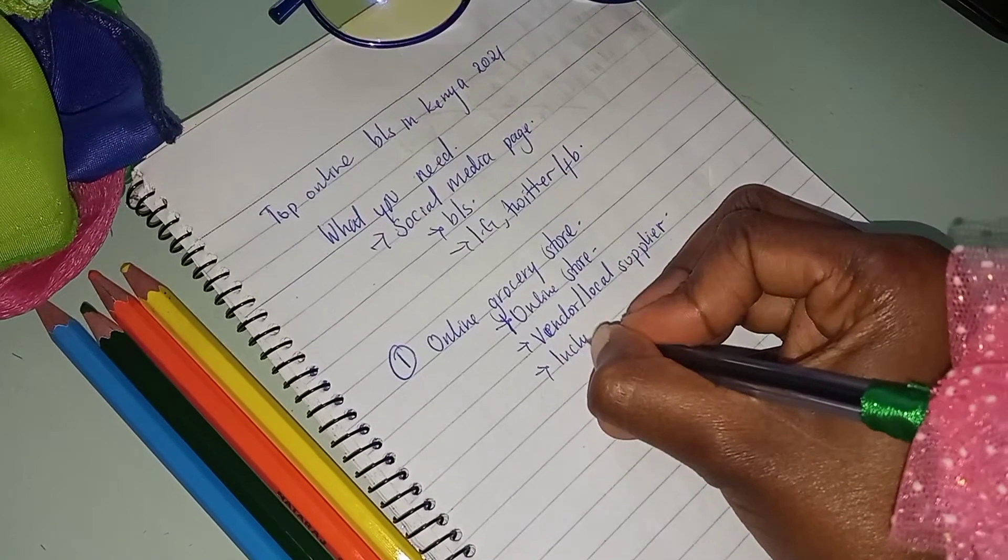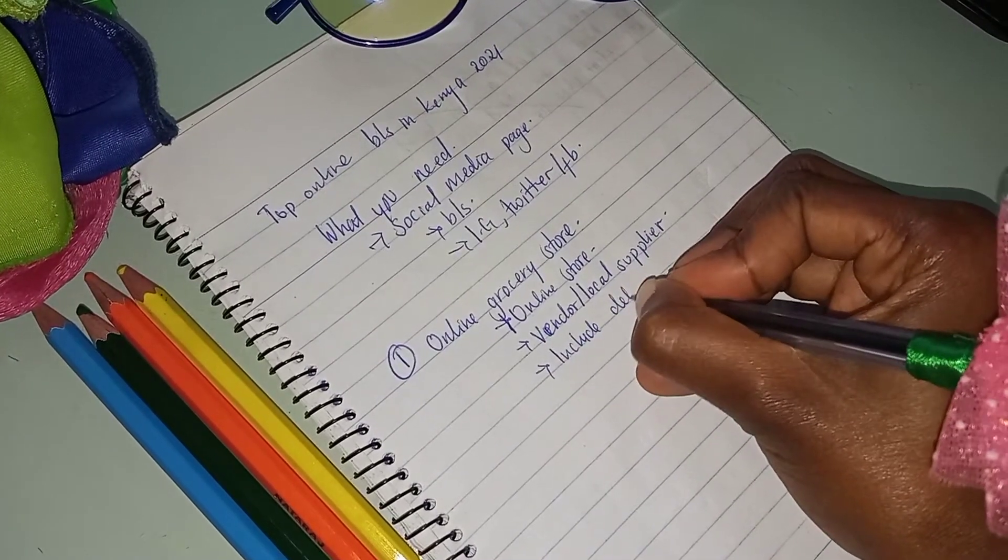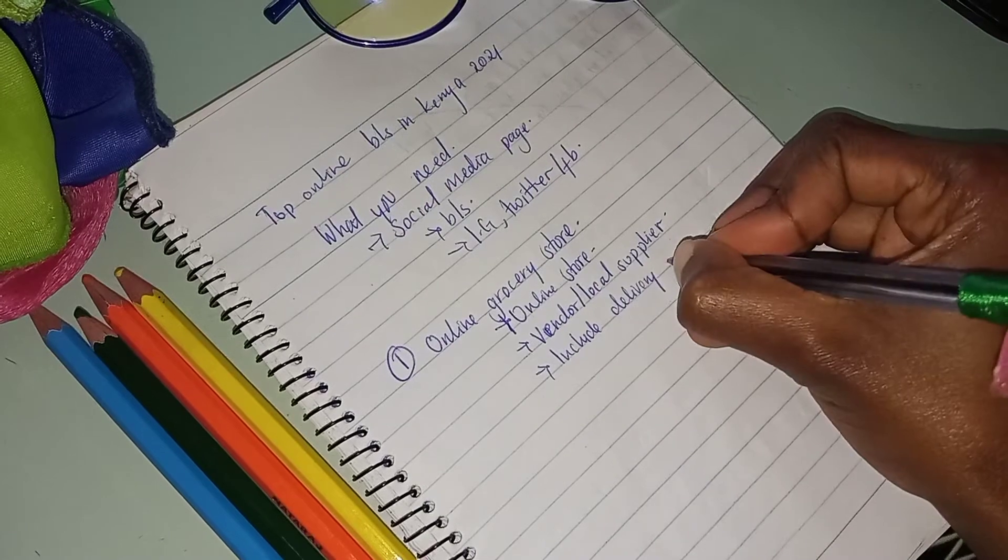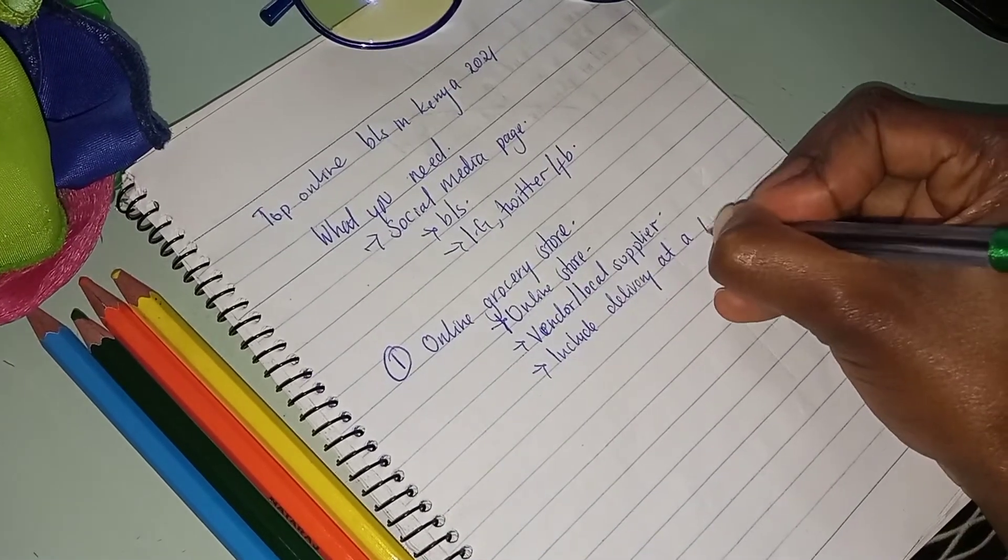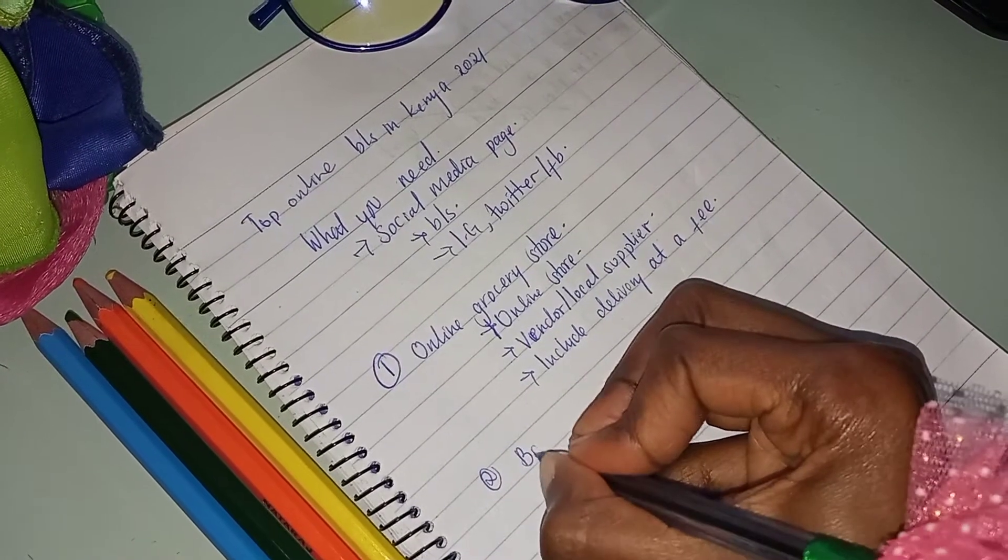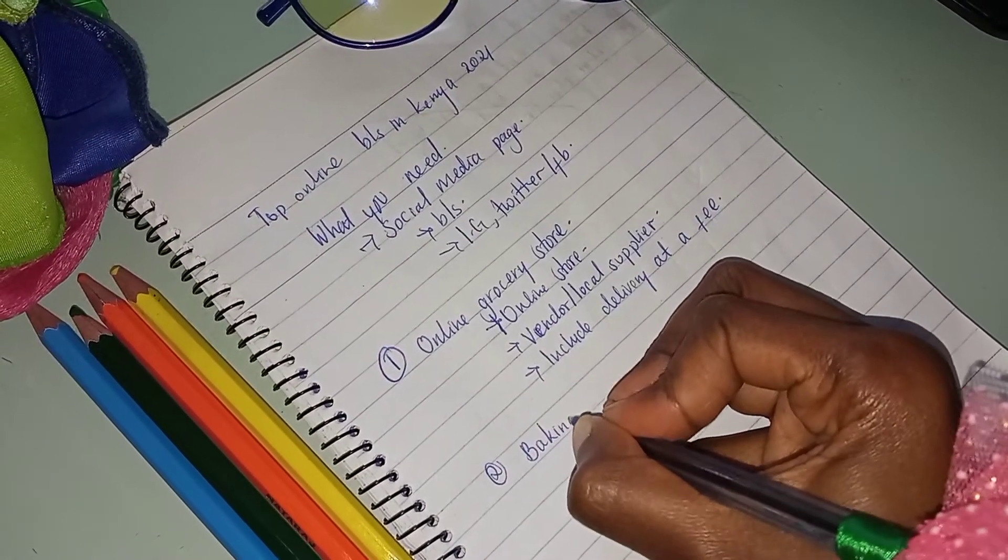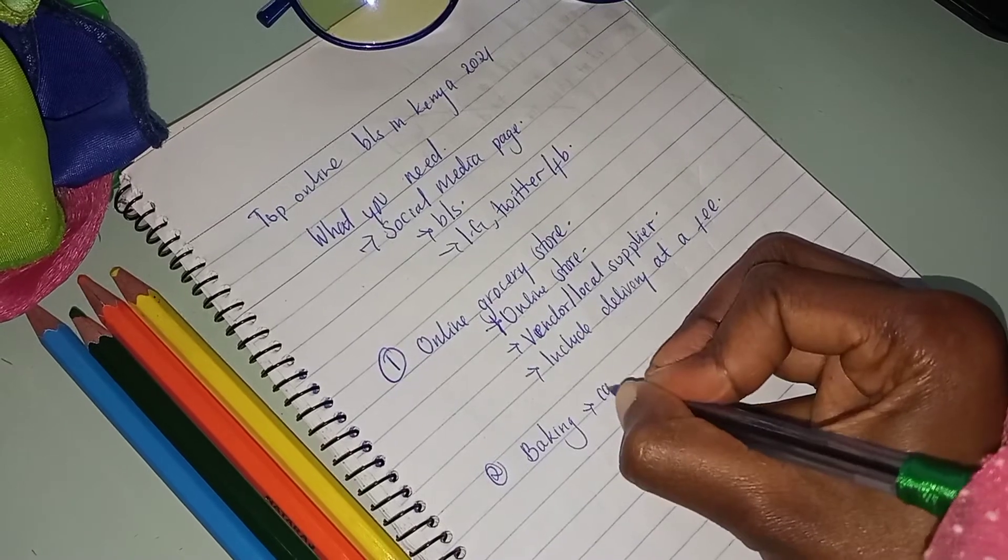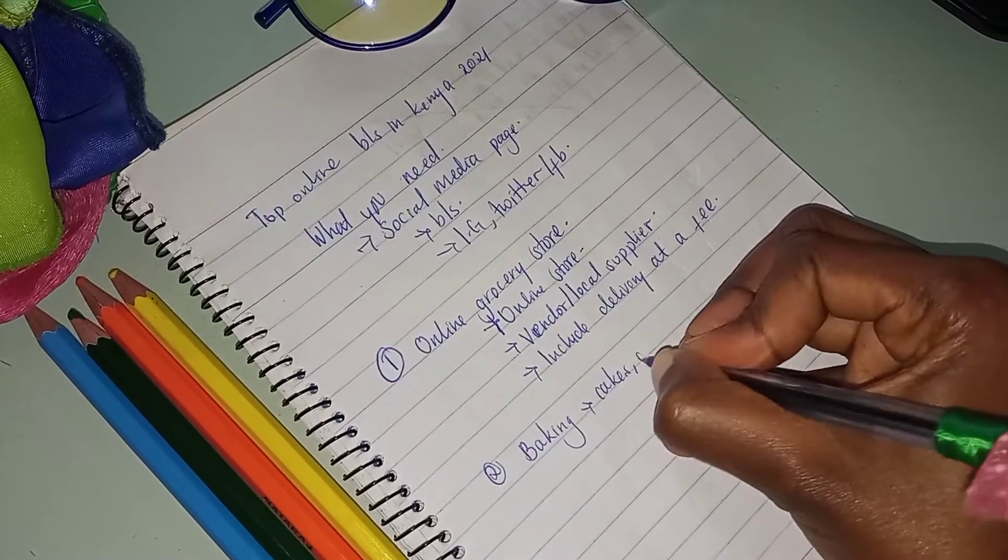Then the second business idea that you can do online is baking. What kind of baking are you going to do? Are you going to bake cakes, naked cakes, soft with soft icing or fondant?